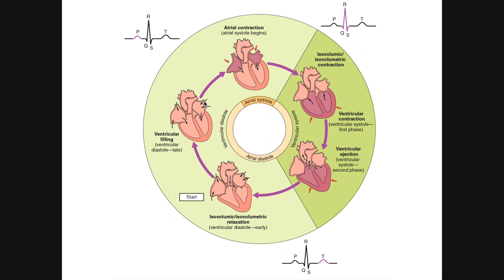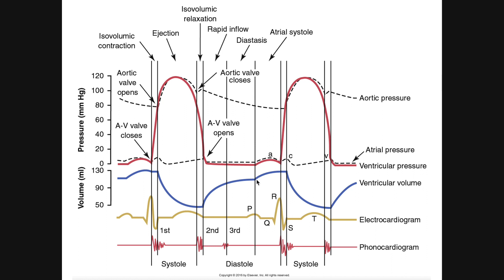After ventricular filling, there's a short period where the left atrium contracts. The ventricle is still filling, but now the atrium contracts to force the last bit of blood into the left ventricle — this is active filling. We see a brief push of blood into the left ventricle. The period between these two vertical lines is atrial systole, delivering that last bit of blood. There is a small increase in left ventricular pressure due to the additional blood arriving quickly and the push from the atrium itself.